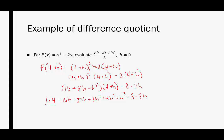Now this is the entirety of p of 4 plus h. Let's start cleaning it up. We have 64 and minus 8, giving 56. Then 16h plus 32h minus 2h gives 46h. Then 8h squared plus 4h squared gives 12h squared. And lastly we have h cubed. I'll flip the order so h cubed comes first, if you prefer that — I'll leave it for now.